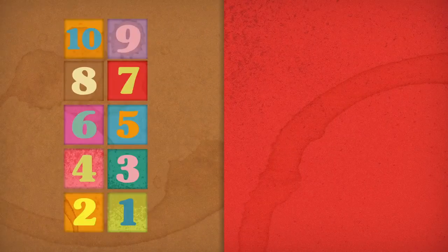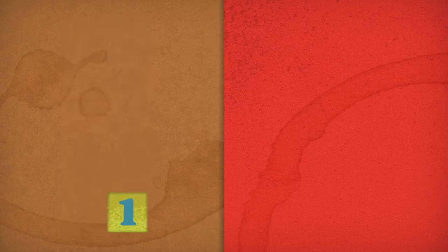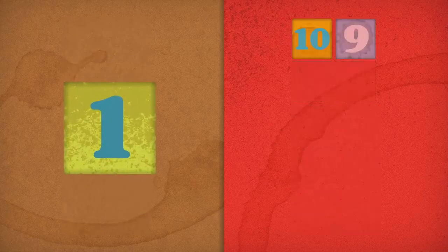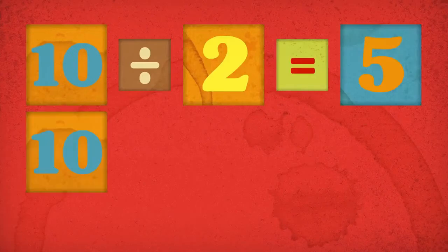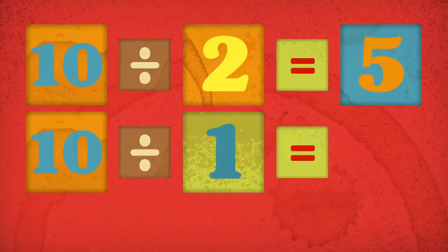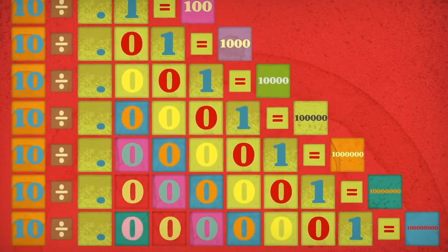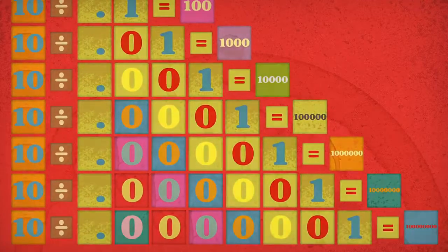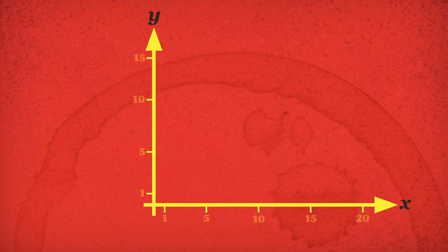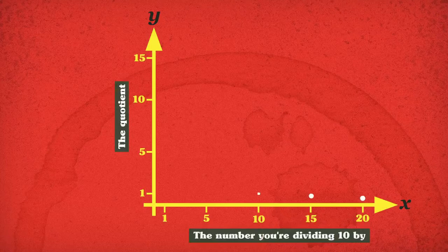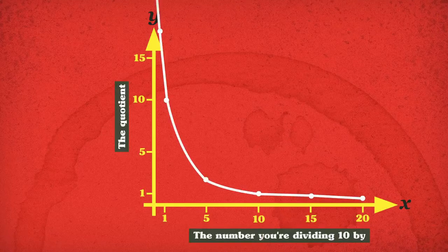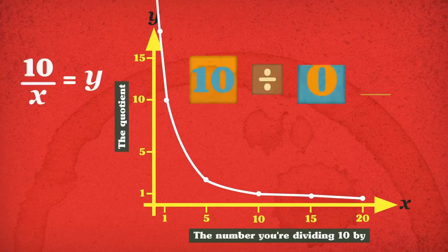Normally, dividing by smaller and smaller numbers gives you bigger and bigger answers. 10 divided by 2 is 5; by 1 is 10; by 1 millionth is 10 million, and so on. So it seems like if you divide by numbers that keep shrinking all the way down to zero, the answer will grow to the largest thing possible. Then isn't the answer to 10 divided by zero actually infinity?